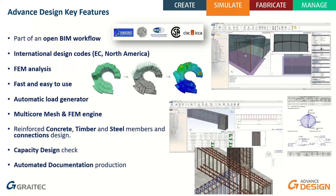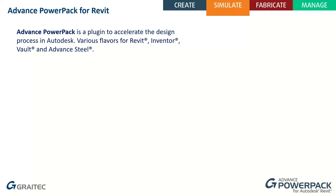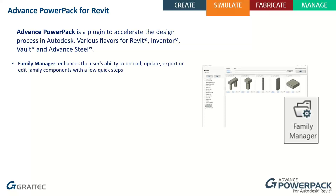The other software used today is the Advanced PowerPack for REVIT. The PowerPack is a plugin that exists in different flavors — for REVIT, for Advance, for Volt, and for Advanced Steel. The idea of the PowerPack is to provide REVIT users with daily tools to speed up modeling, processing of the BIM model, and tagging. It has around 70 functionalities dedicated to daily use of REVIT.